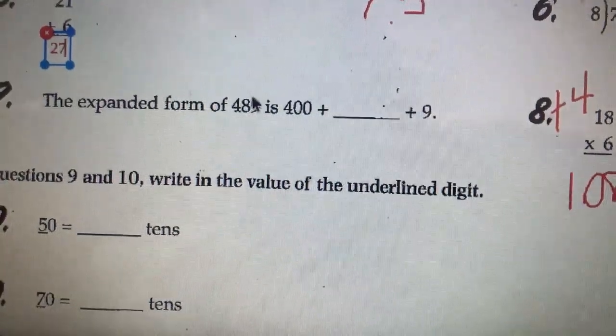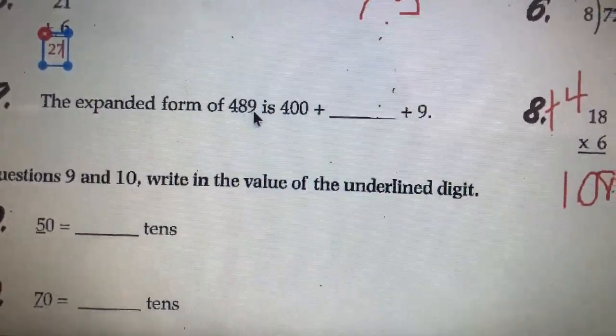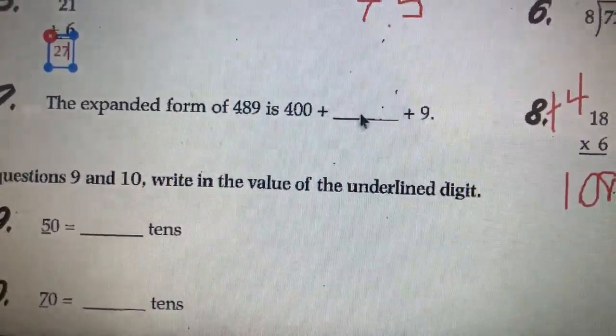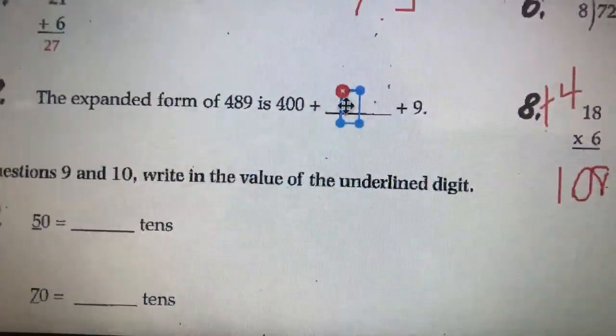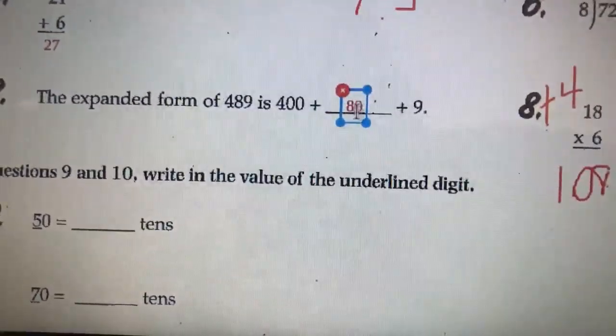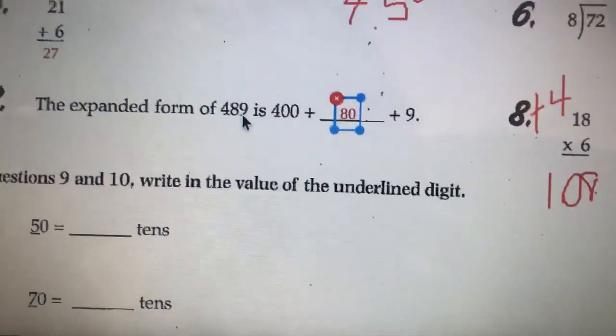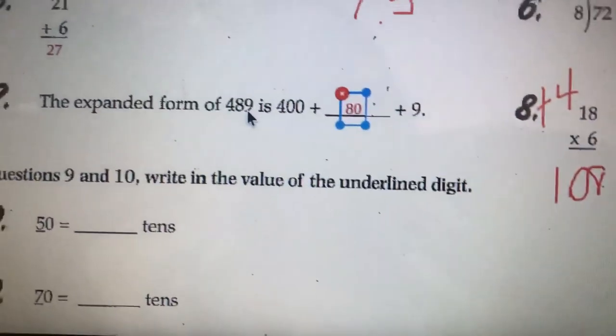400 plus 80. And instead of a 9 right there, we would put a 0. So, 400 plus 80 plus 9. There's nothing after 9, so we don't add any 0s there.